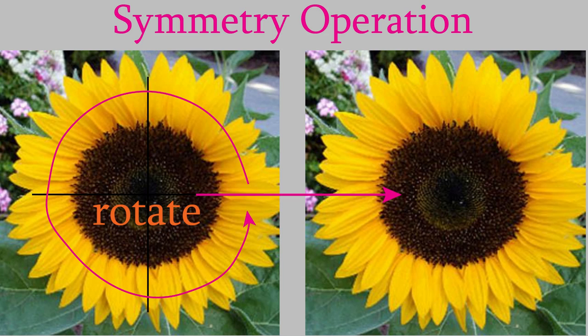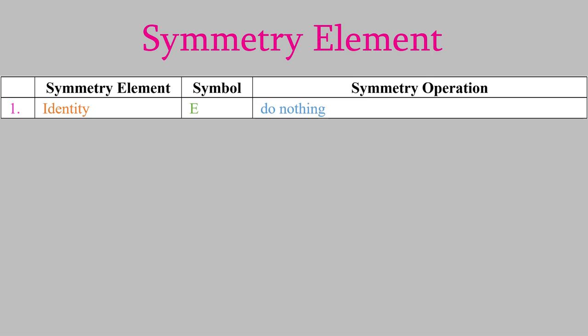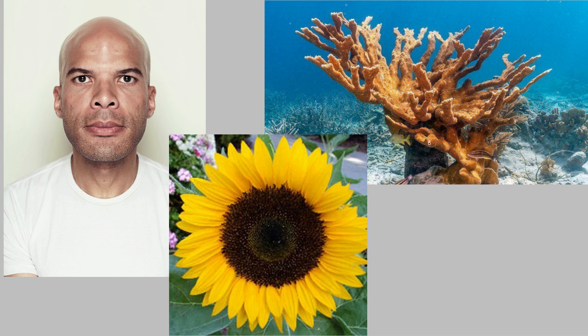It turns out that there are seven different types of symmetry element that we could have in a molecule. The first symmetry element is the simplest — it seems almost silly to include it, but we'll see it's sometimes important. It's known as the identity element, and it has the symbol E. The symmetry operation we perform is simply to do nothing to the object. Of course, when we do nothing, it looks exactly the same as when we started. So every object has the identity element, no matter how non-symmetric it is otherwise.